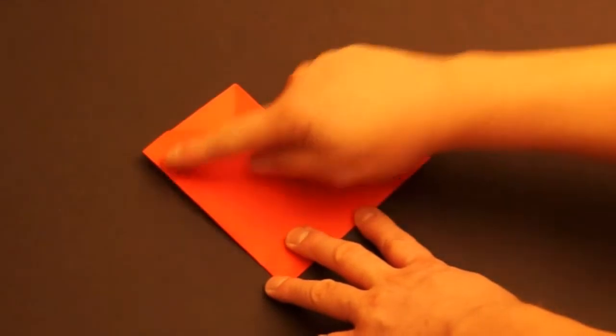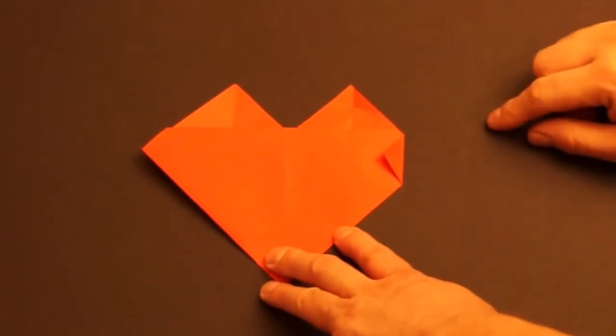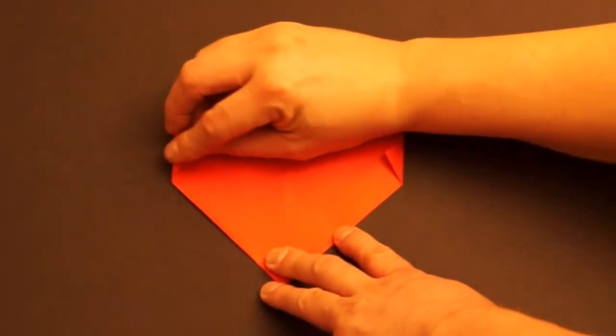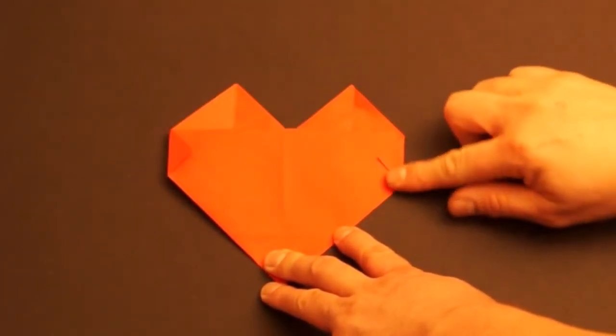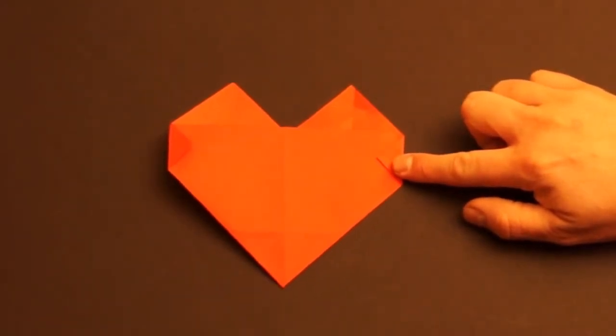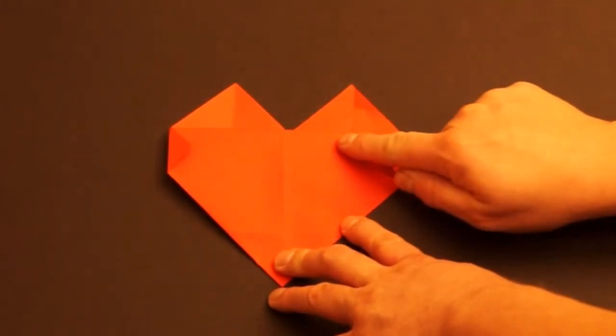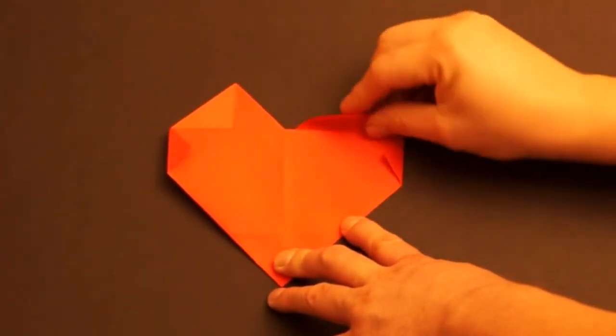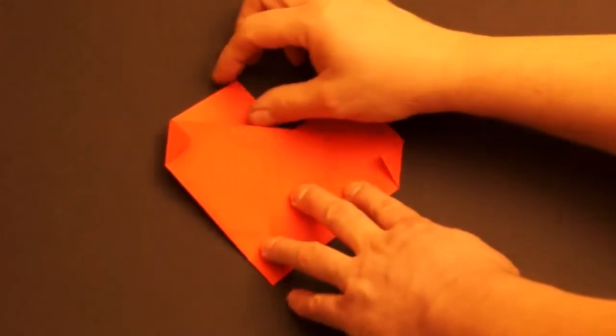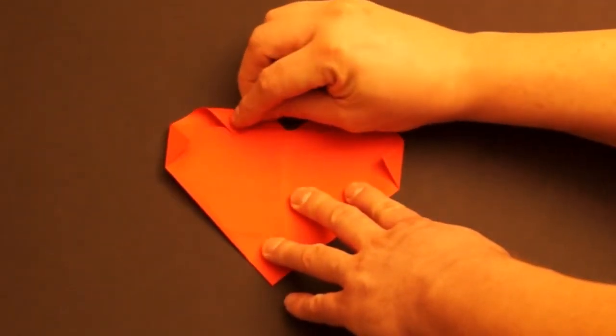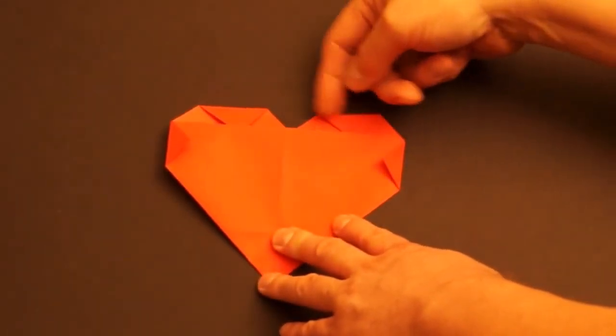Fold the outside corners in towards the middle. Fold the top points down past this edge just a little bit, and then tuck them in behind.